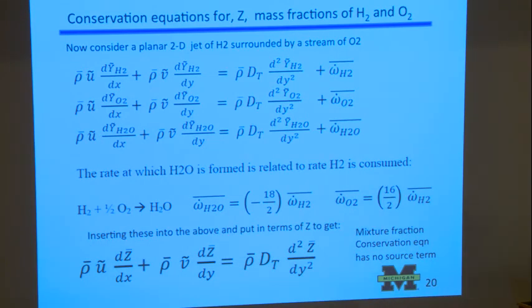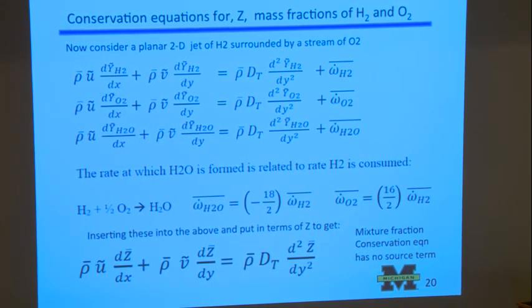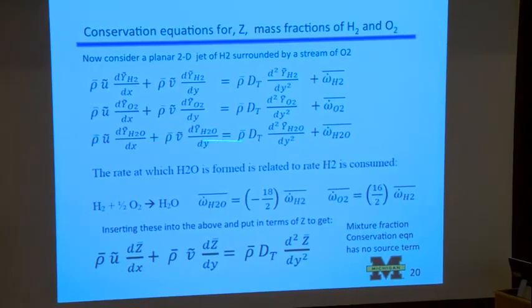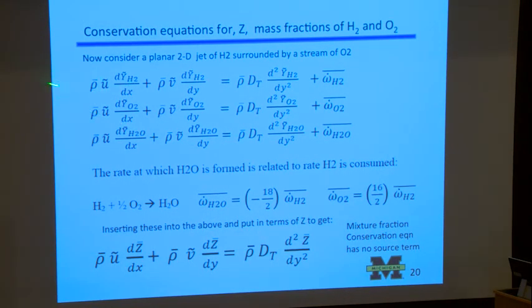Okay. So why do we do all this? Zeldovich, this famous mathematician, argued that if you take the conservation equations, and now here I'm plotting for a jet, non-premixed jet flame with turbulent flow. And so I've put the turbulent diffusivity here, and this is the mass fraction of H2, and convection, diffusion, convection, diffusion. We have three conservation equations, but the hard part is that we have these three reaction rates.